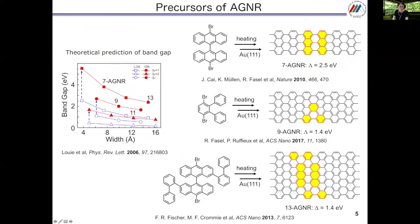This is the theoretical prediction of bandgap energy. Depending on the widths of the graphene nanoribbon, the bandgap is decreasing. The AGNR is separated into three groups depending on the number of carbons in the direction of widths: N equals 3p plus 1, 3p plus 2, and 3p. These are the reported monomer units for the AGNR.